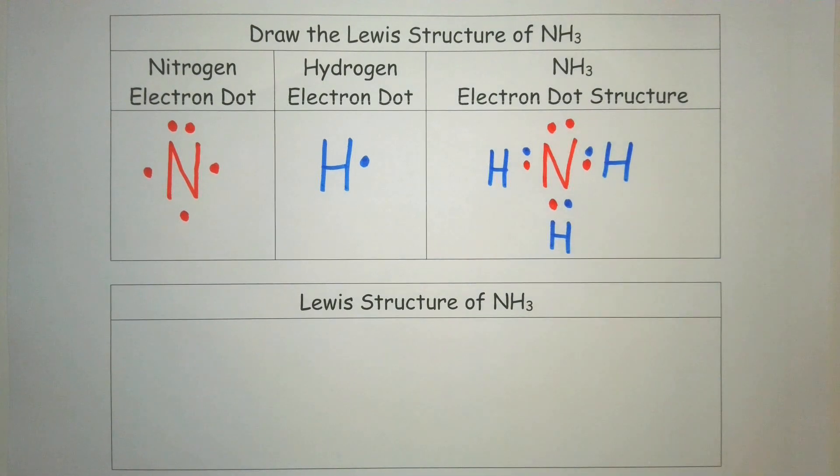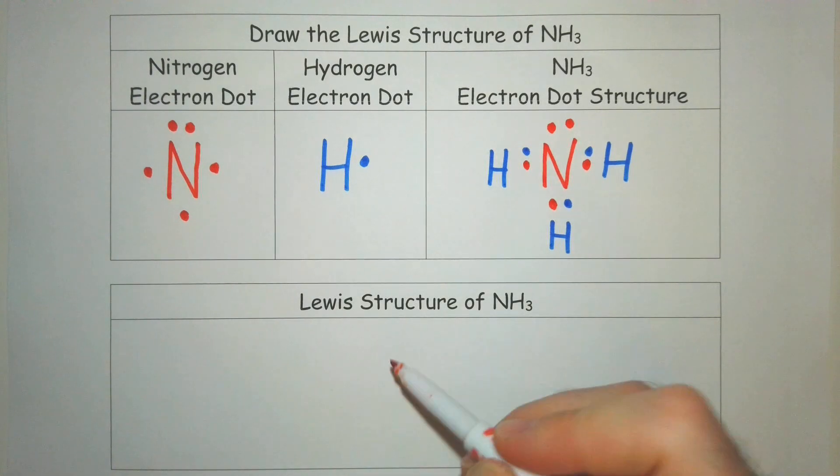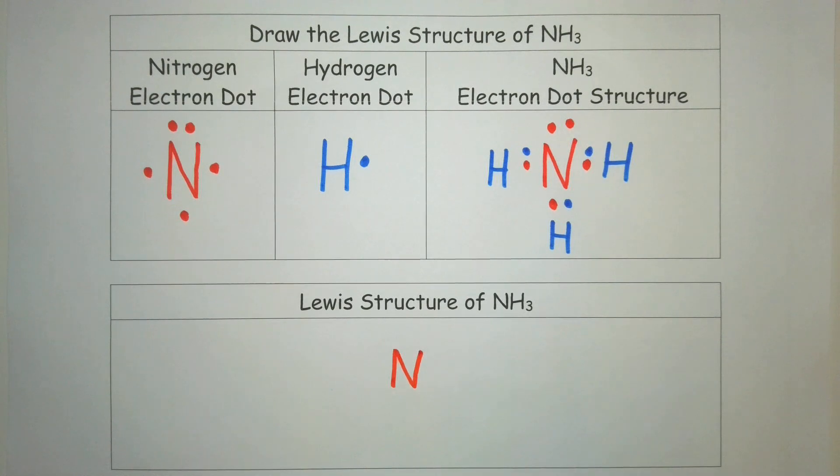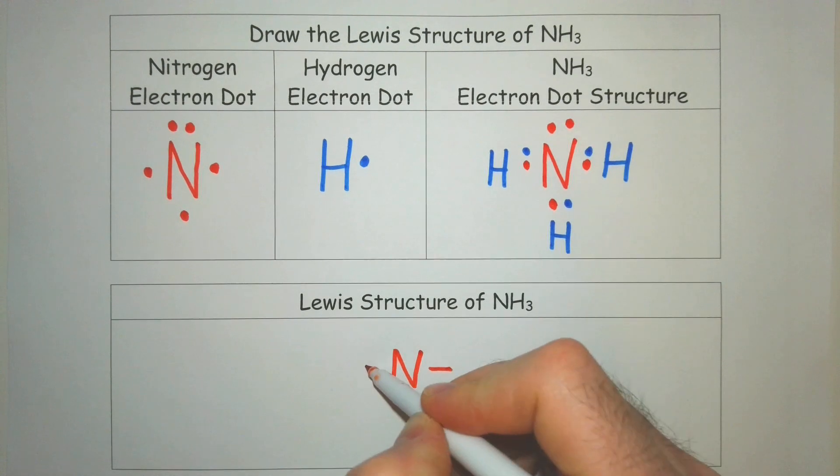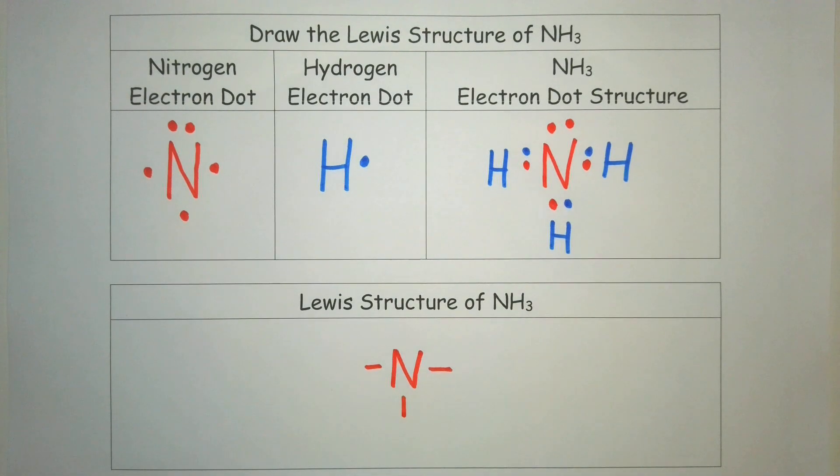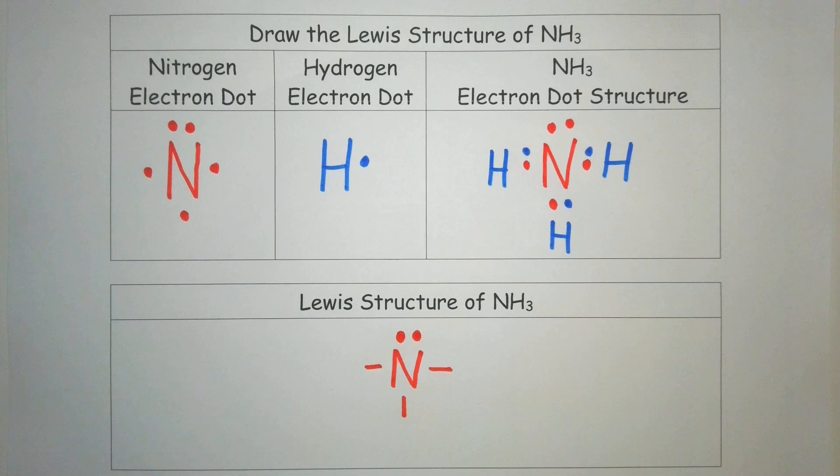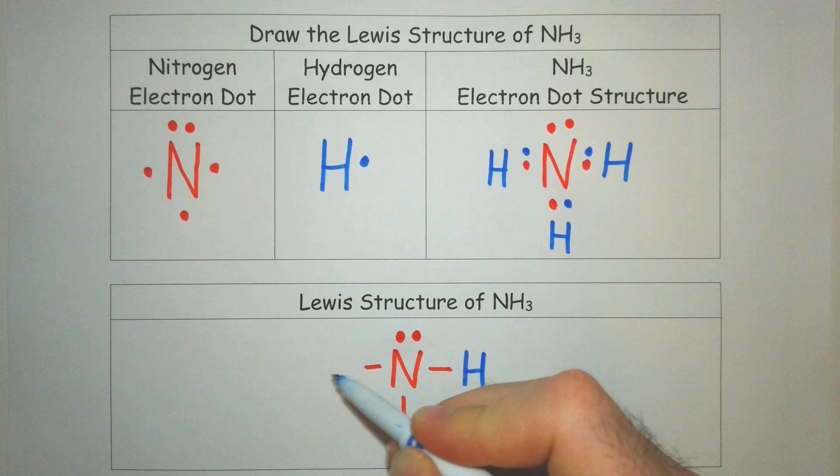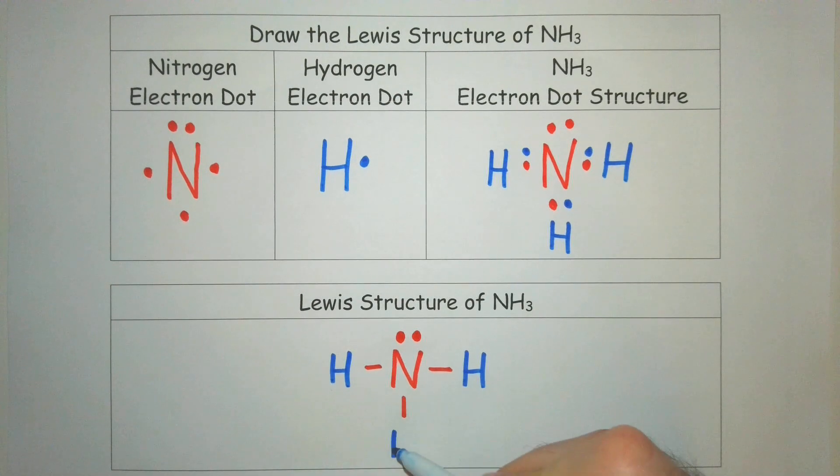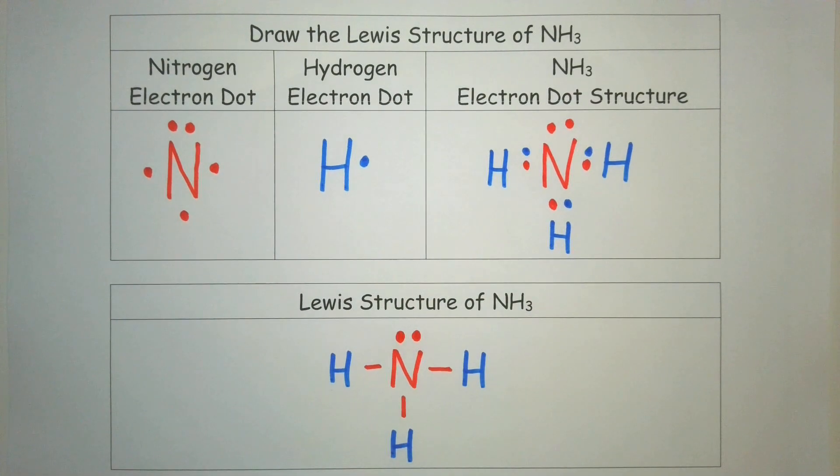This is the electron dot structure of ammonia, but we need the Lewis structure. So we're simply going to rewrite it again. Anytime we have a bond, we are going to put a line instead of the two electrons. When we draw our nitrogen, we're going to have a lone pair of electrons that are not participating in the bond. We've got to show those for Lewis structures. So I'm going to put our hydrogens in their location. And now we have the Lewis structure of NH3.